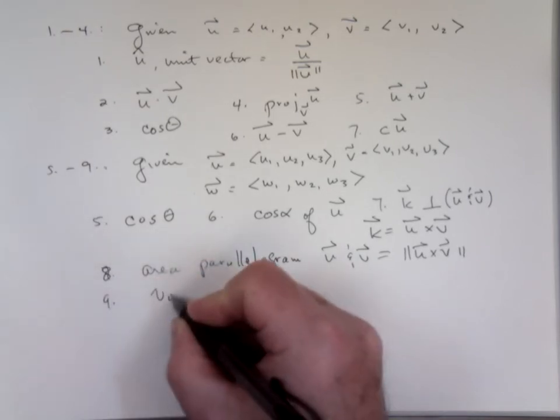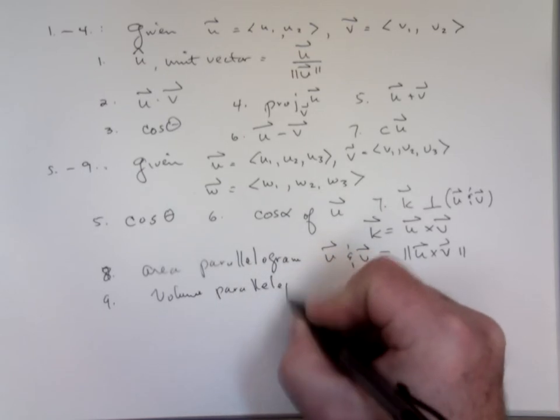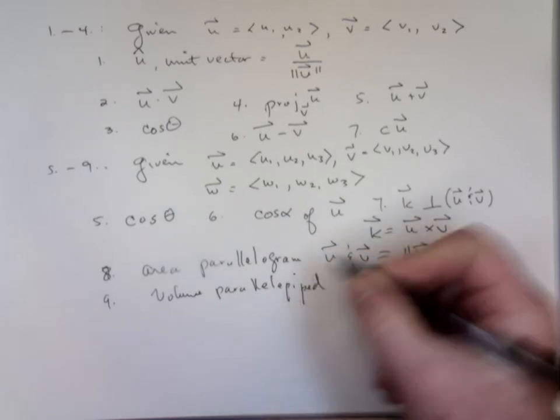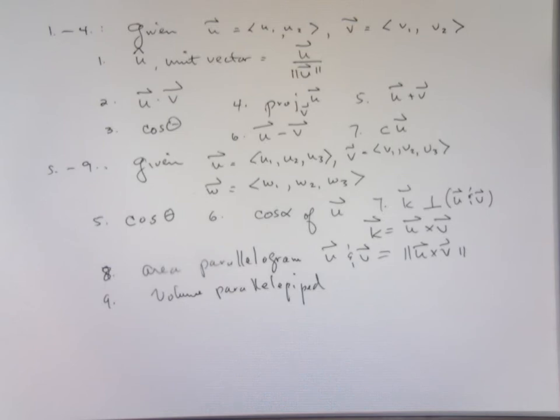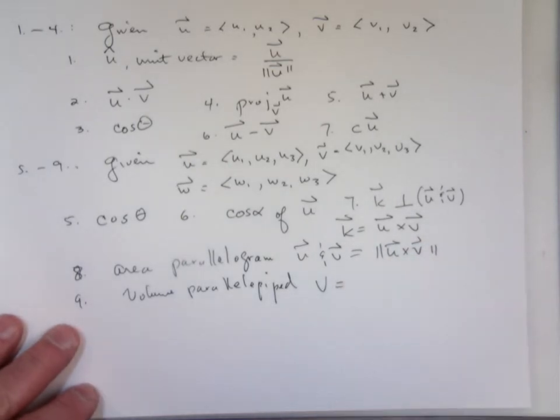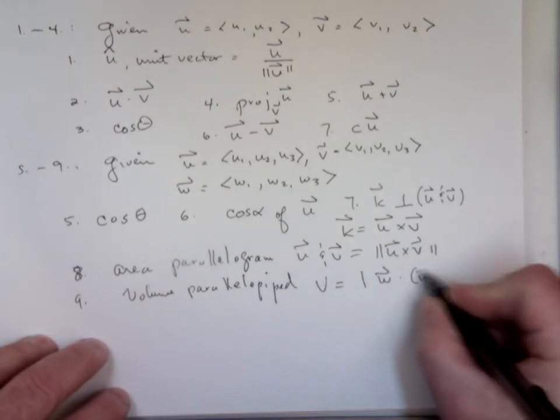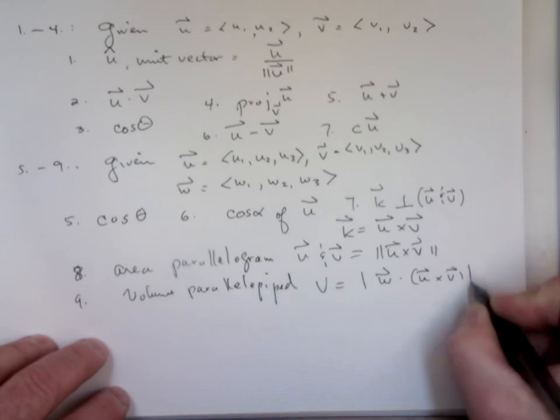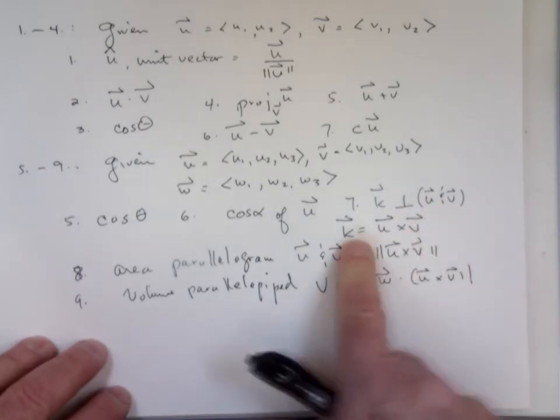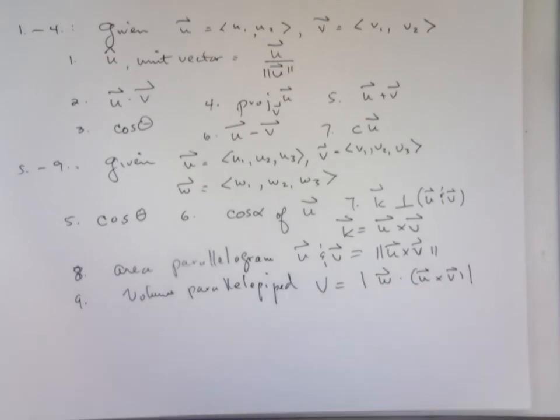And then I asked for the volume of the parallelepiped. And how do you find the volume of the parallelepiped determined by those three vectors? Yeah, it's a triple scalar product. That's exactly what it is. It's a dot product of the cross product with the cross product. If I've already asked you the cross product, then all you have to do is dot it with the other vector, which is what I think I probably will do.